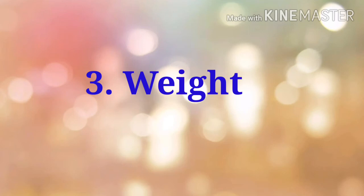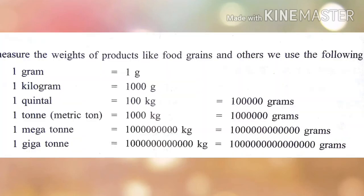Now let us look at weight. 1 quintal is equal to 100 kilograms, 1 ton is equal to 1000 kilograms, 1 megaton means 10 to the power 6 tons, and 1 gigaton means 10 to the power 9 tons.